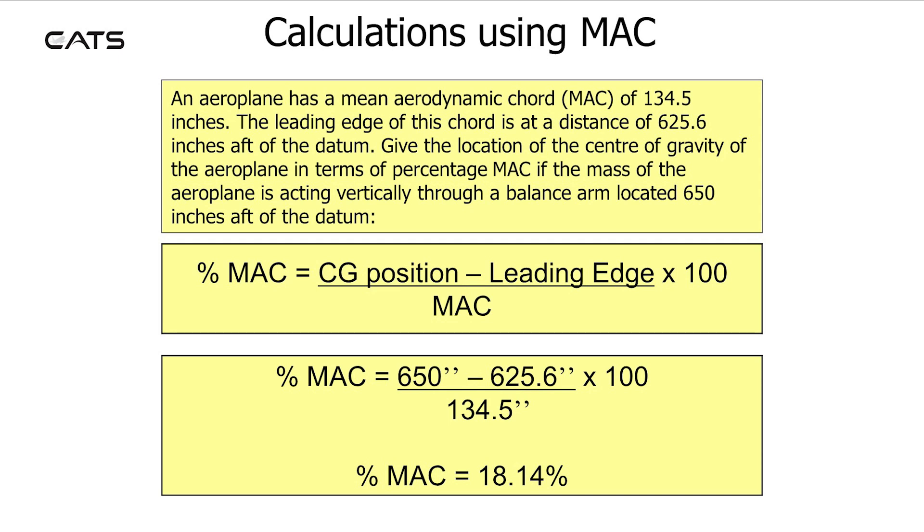Substituting into the equation: 650 minus 625.6 divided by 134.5, all multiplied by 100, equals 18.14%.